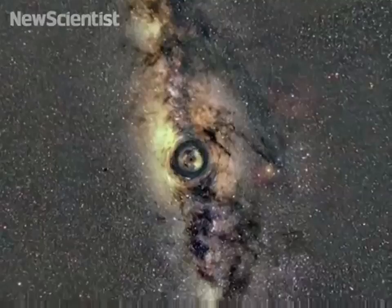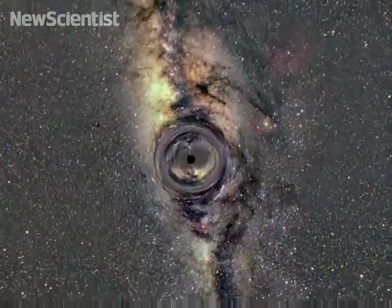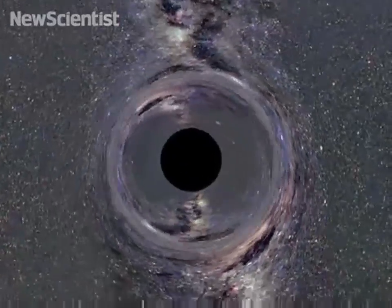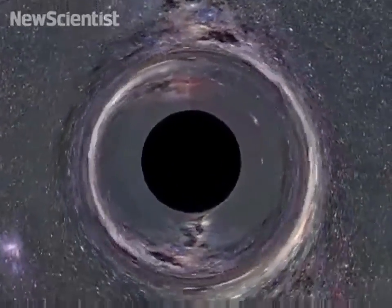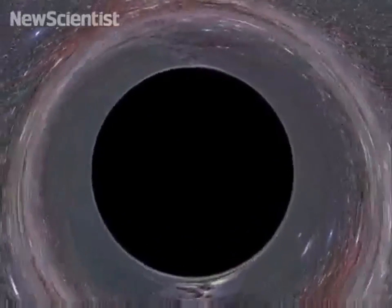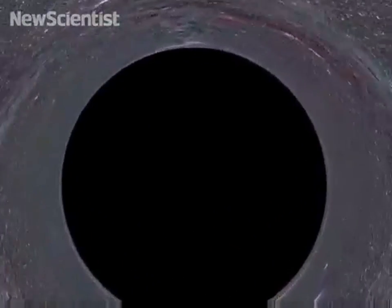A black hole's gravity is so strong that not even light, the fastest thing in the universe, can escape its grasp. The point of no return is called the event horizon. Anything crossing this boundary will vanish forever.